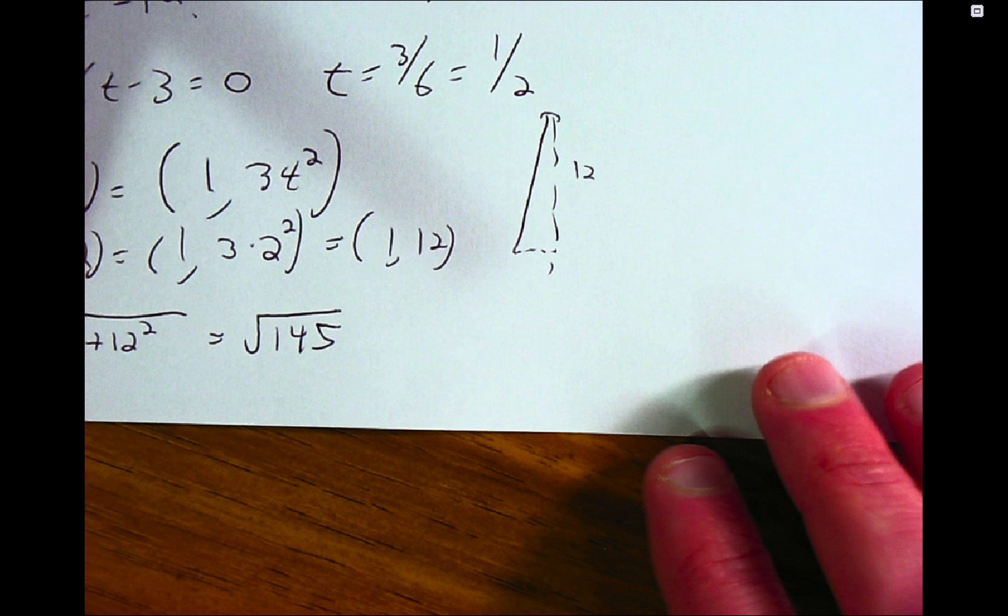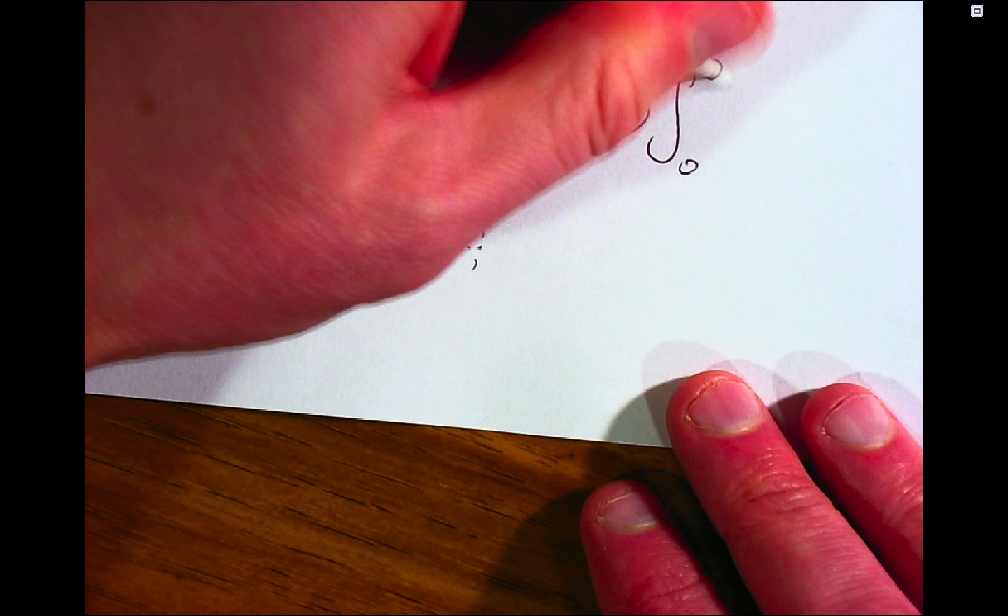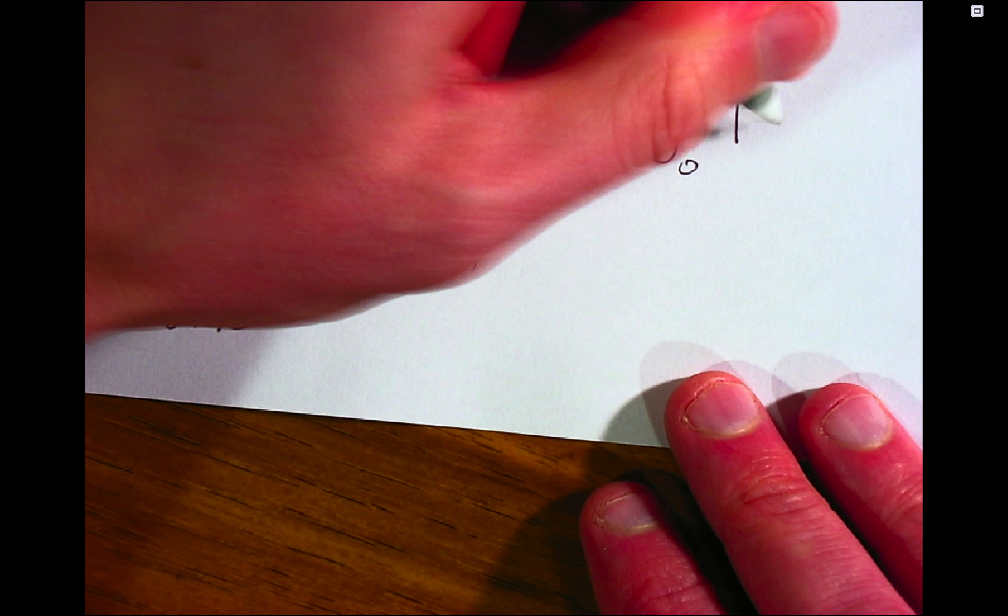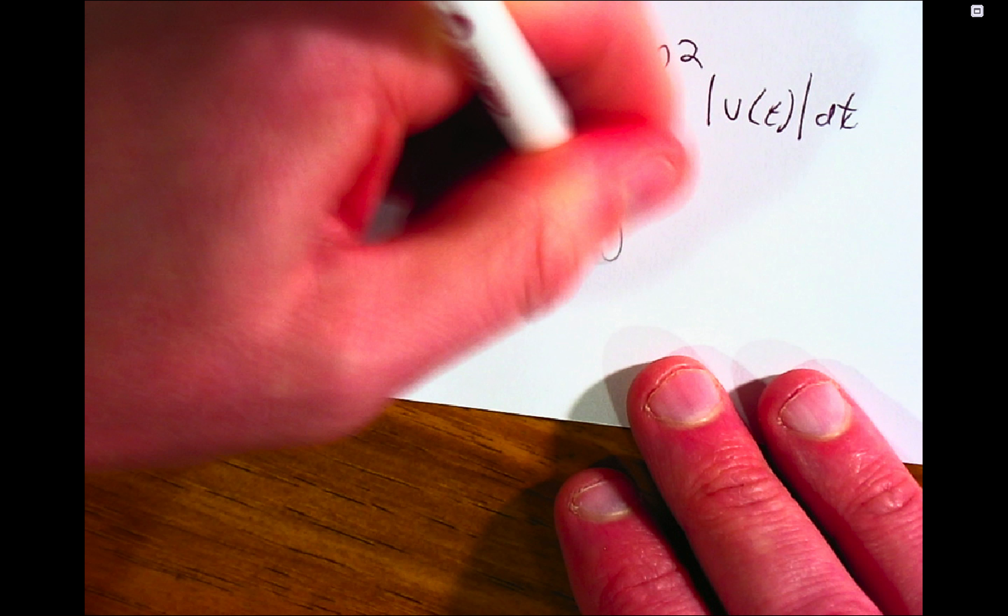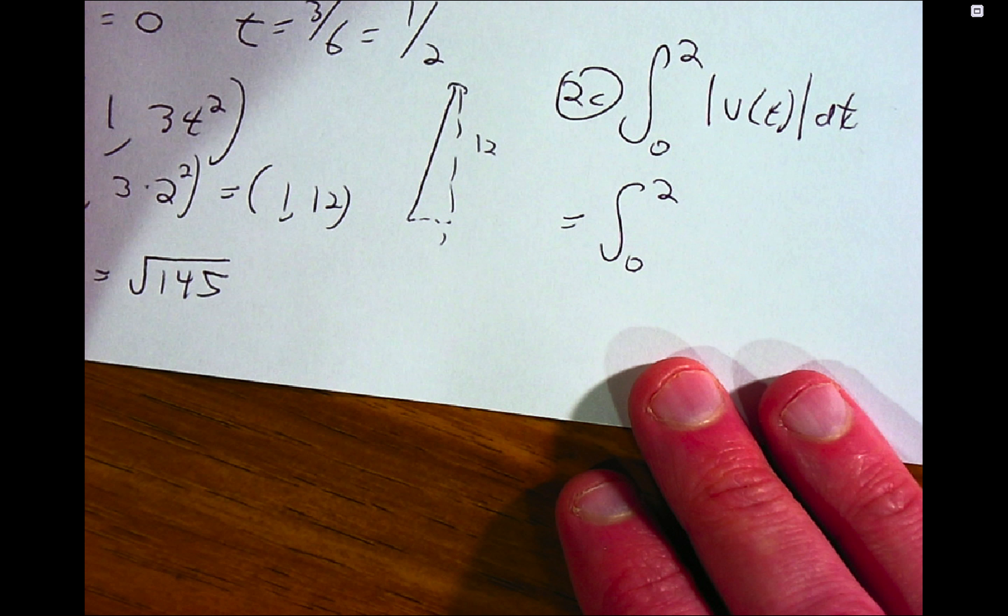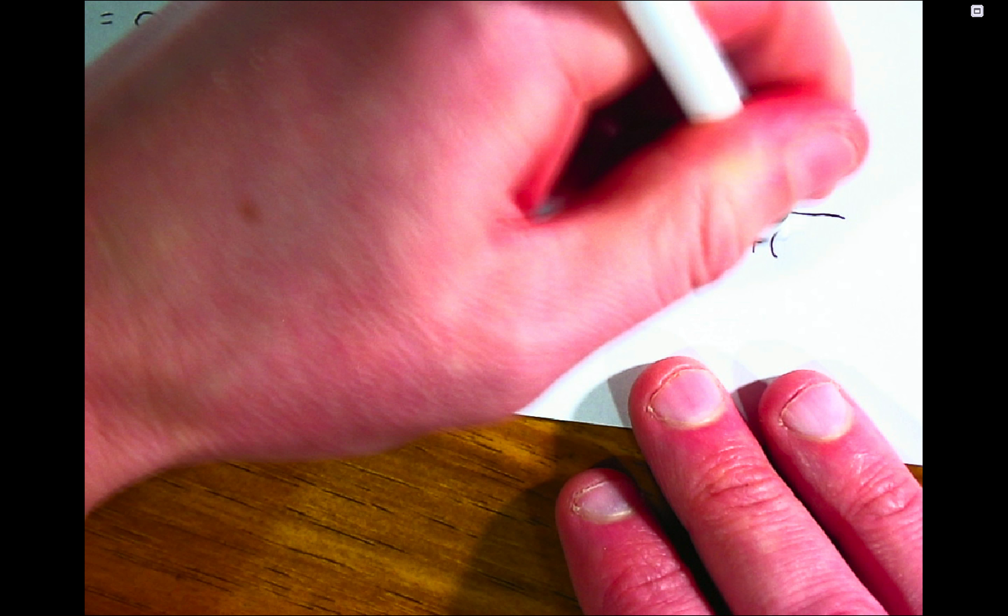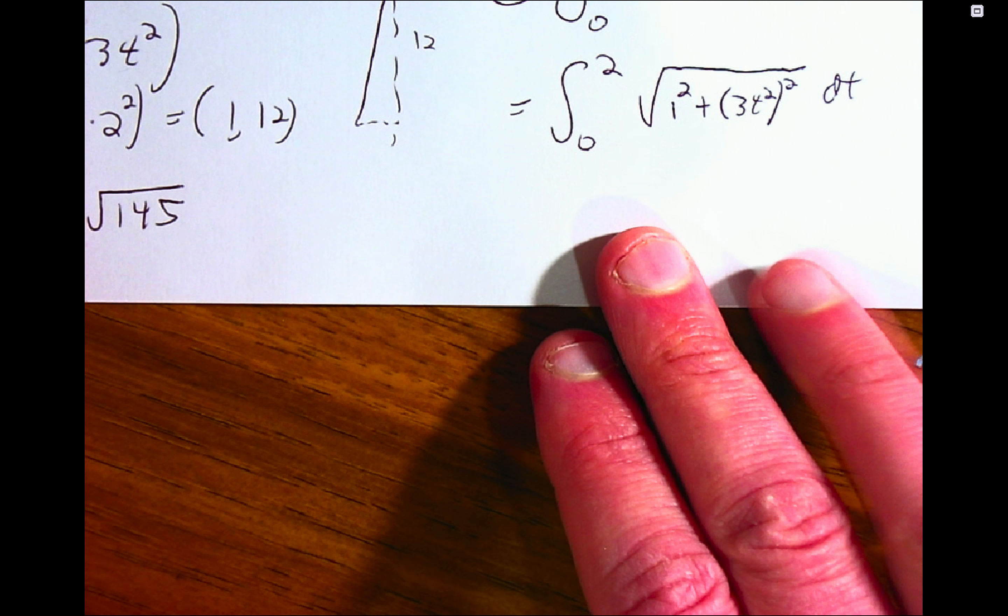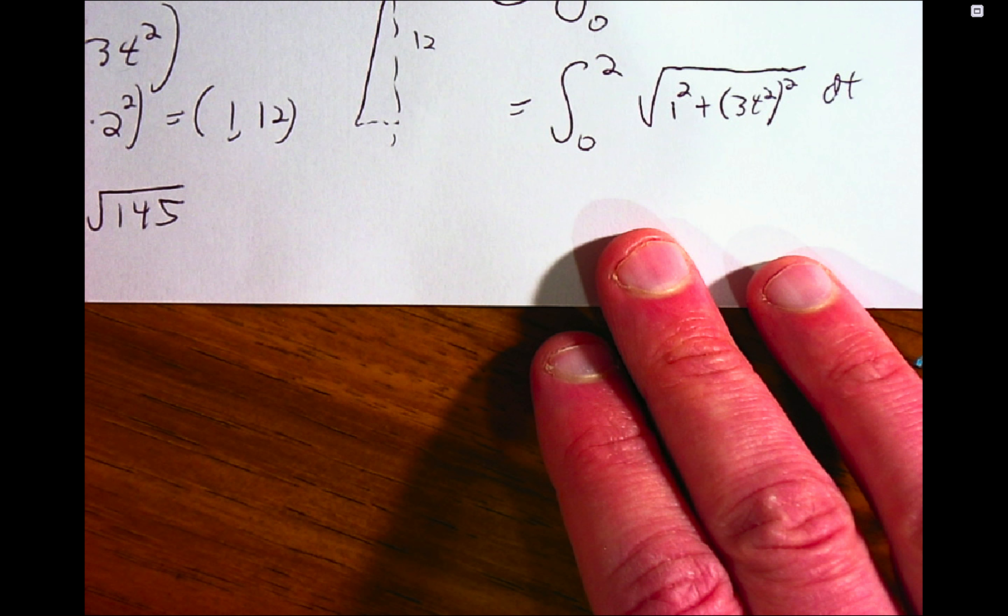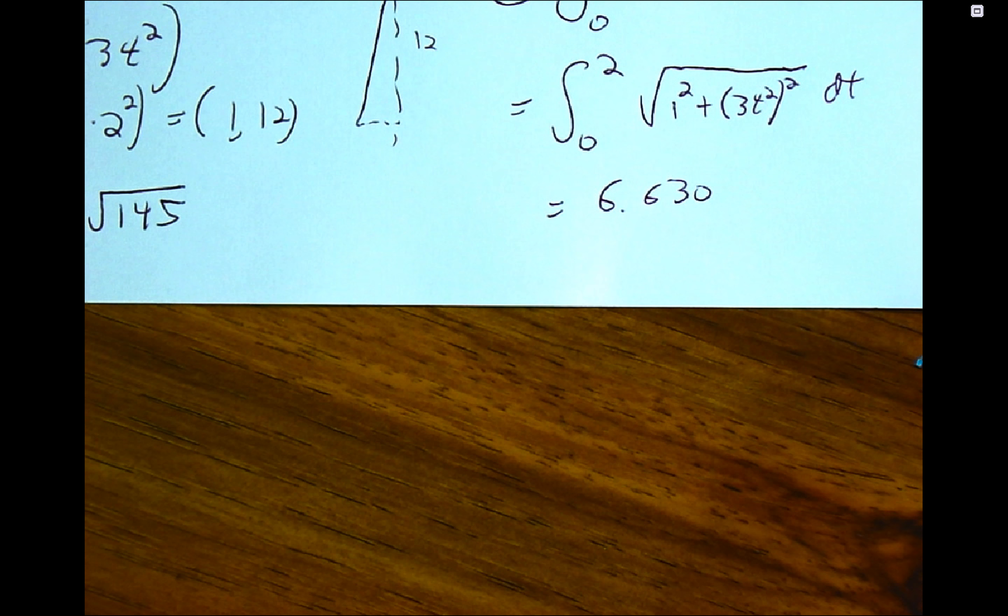And then how far did the particle travel between time 0 and time 2? And the answer there will be the integral of the speed. And so the integral of the velocity vector, the absolute value of the length of the velocity vector. And so we'll have the integral from 0 to 2 of 1 squared plus 3t squared quantity squared. And of course, these integrals typically are not very easy to do by hand or impossible to do by hand. And so we just do this on our calculator. And I believe that gives us 6.630 for the length of that curve or how far the particle traveled.